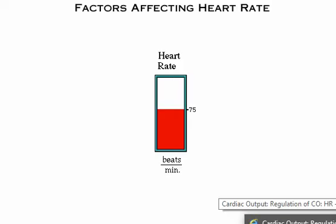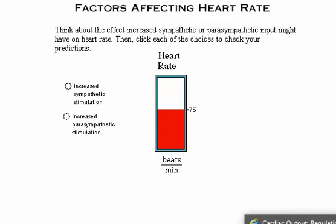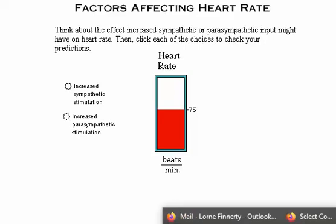The key factor regulating heart rate is the balance between sympathetic and parasympathetic stimulation of the heart. Think about the effect increased sympathetic or parasympathetic input might have on heart rate, then click each of the choices to check your predictions.